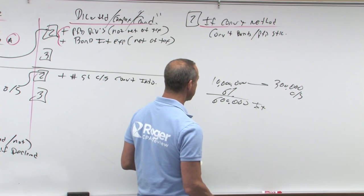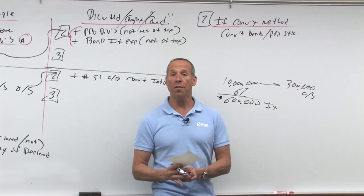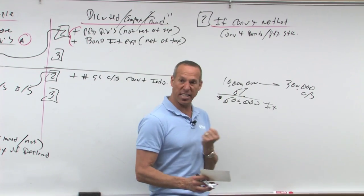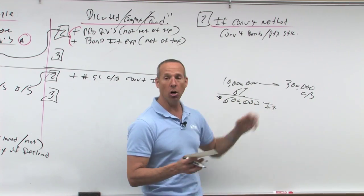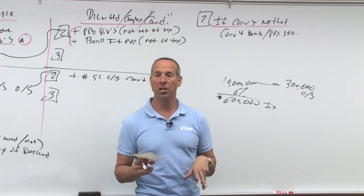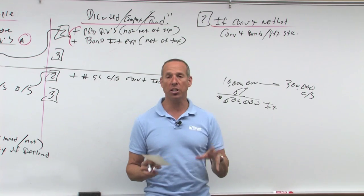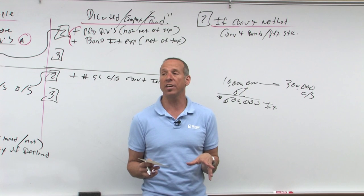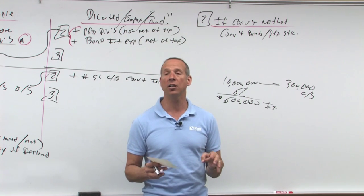So they're convertible into 300,000 shares of common stock. Now I've got this $600,000 of interest, so if you convert, what happens? If you convert, I save $600,000. If you convert, what happens is I owe you 300,000 shares of stock. So that's what's going to happen.